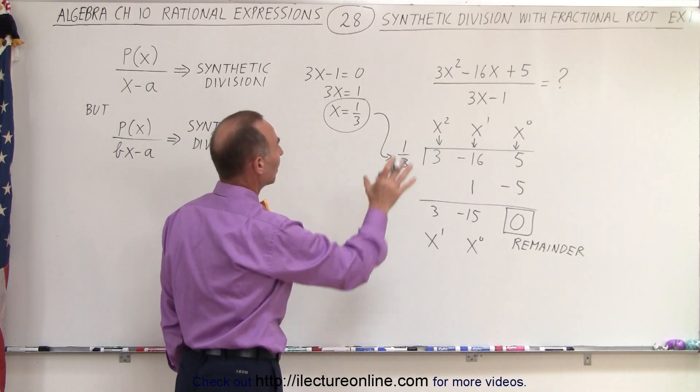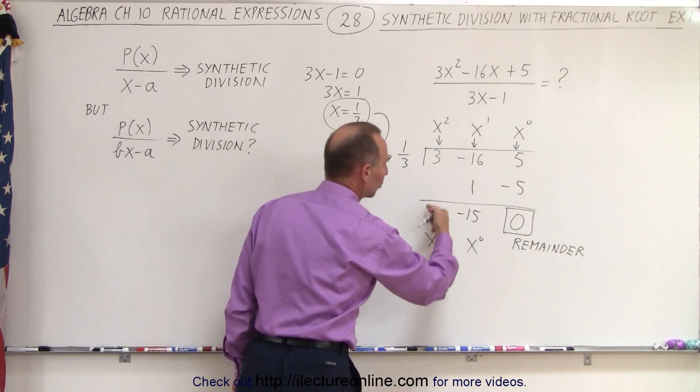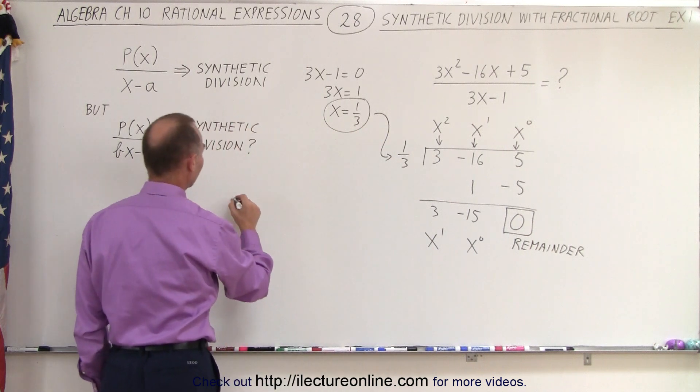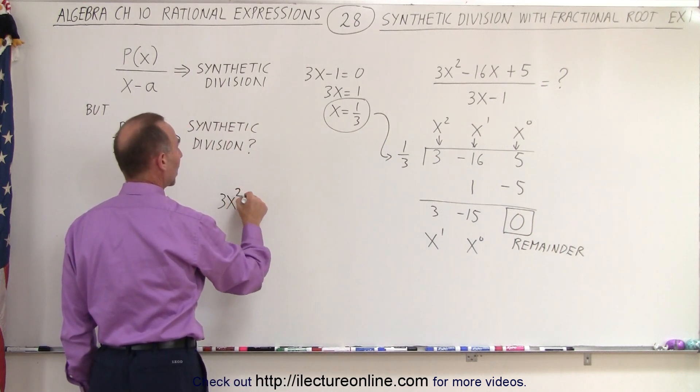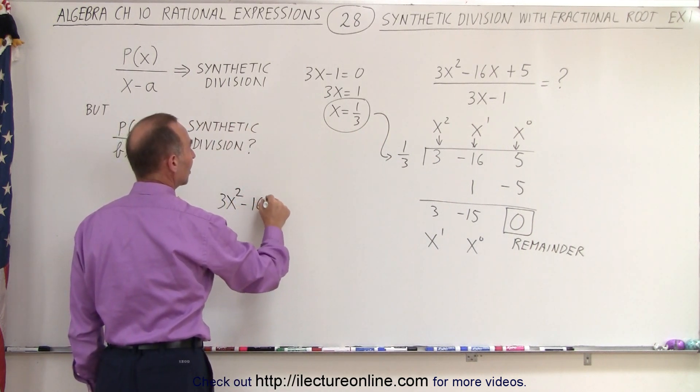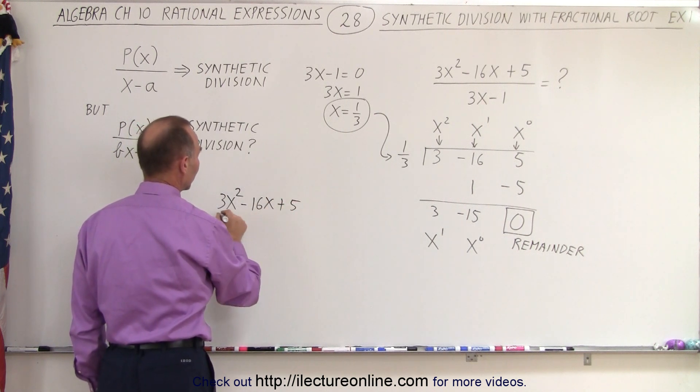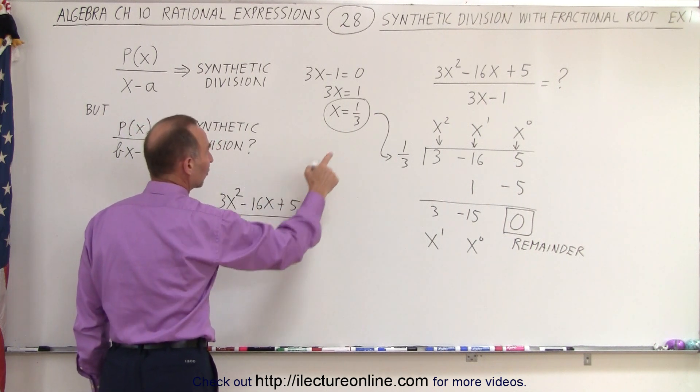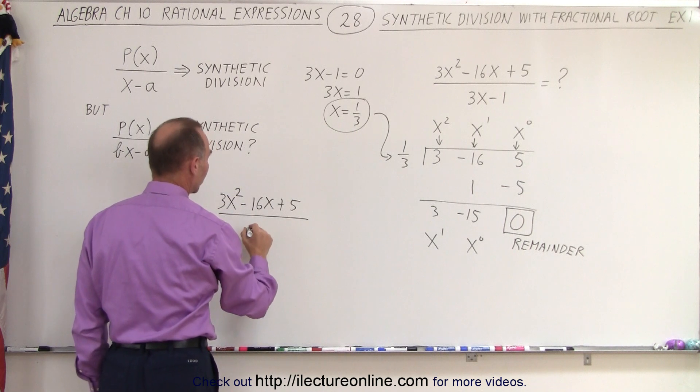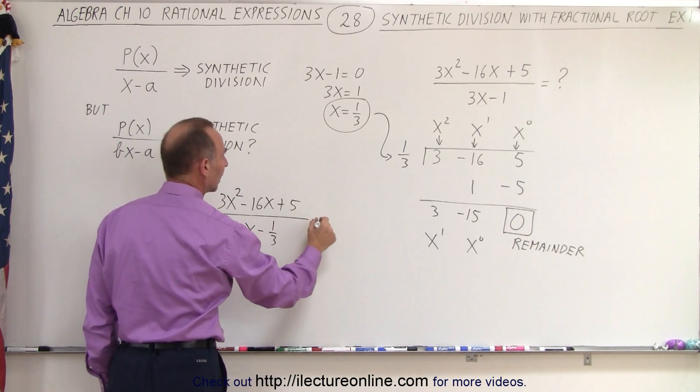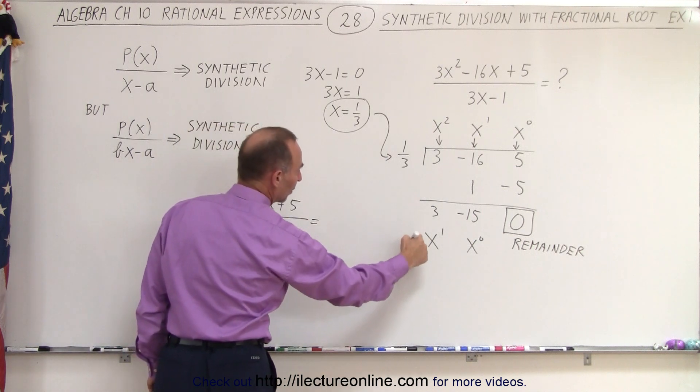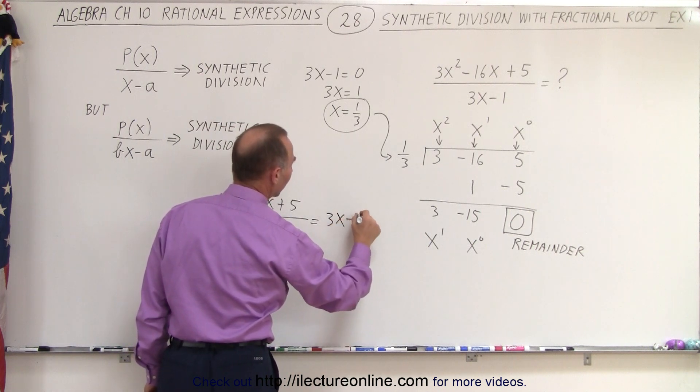So now what we need to do is write out what this answer really signifies. So now we can say that 3x squared minus 16x plus 5 divided by, now since we used x equals 1 third, we have to write x minus 1 third in the denominator equals, that would be 3x minus 15.